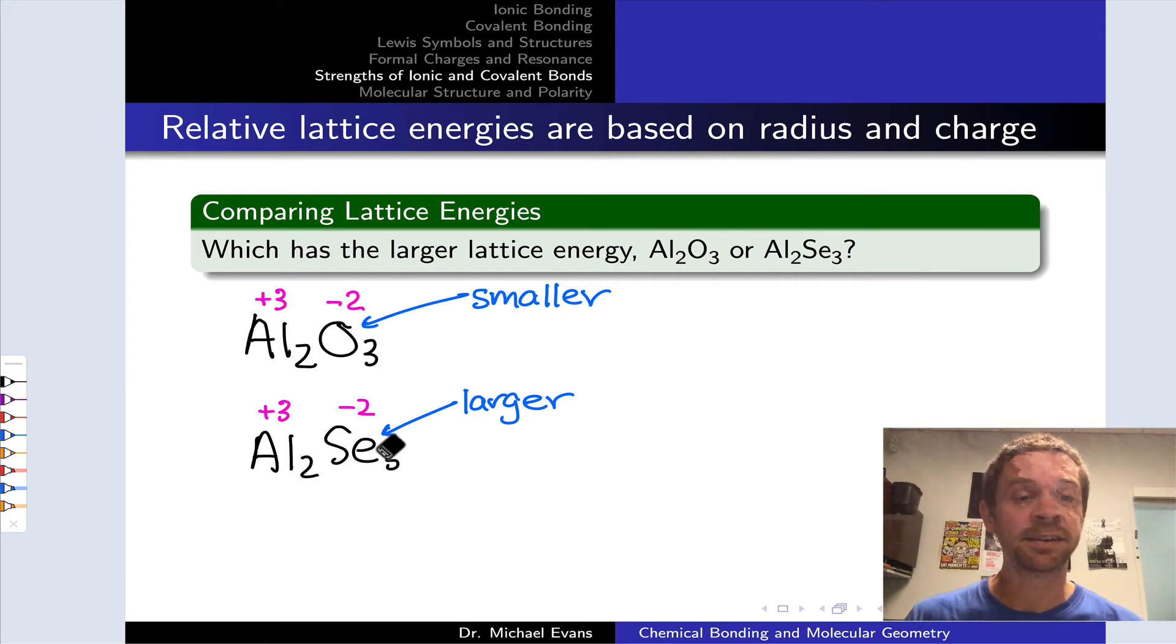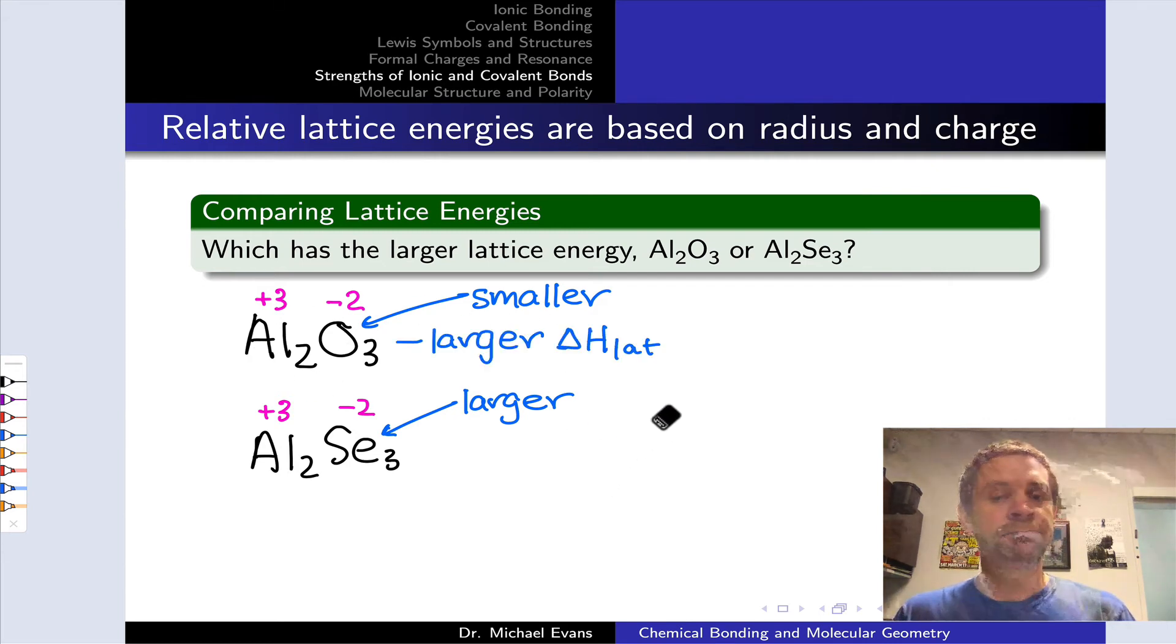And this means that the greater lattice energy associated with the smaller anion is associated with Al₂O₃. So the larger, more endothermic lattice energy is associated with the alumina, Al₂O₃.